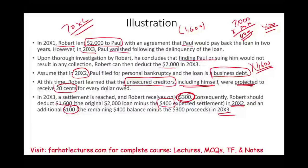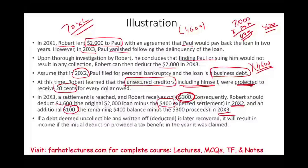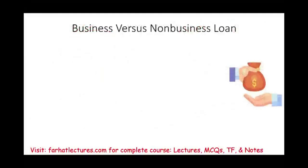Bear in mind: if a debt deemed uncollectible is written off but in later years is recovered — meaning the client comes back and pays you — it results in income, if the initial deduction provided a tax benefit. So if Paul came back and paid Robert, since Robert already took the deduction, Robert will have to include that recovery in his income under the tax benefit rule.